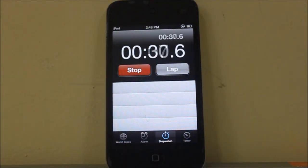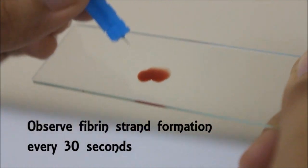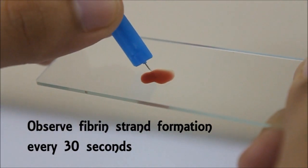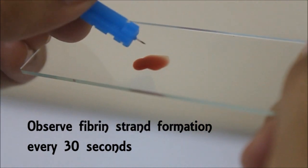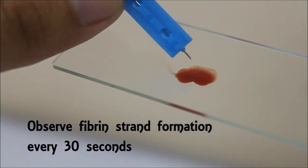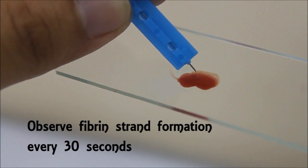At 30-second intervals, let a needle or lancet pass through the blood drop. See to it that you move the needle or lancet upward very gently. Observe for the formation of the first fibrin strand.